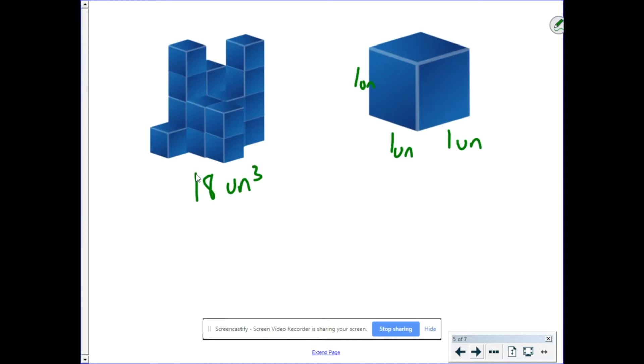But what would happen if we were to multiply the side lengths by two? So instead, we would have two units here, two units here, and two units here. Well, this is a pitfall where many students would say, well, just multiply the volume by two. 18 times two is 36. So the answer must be 36 cubic units.